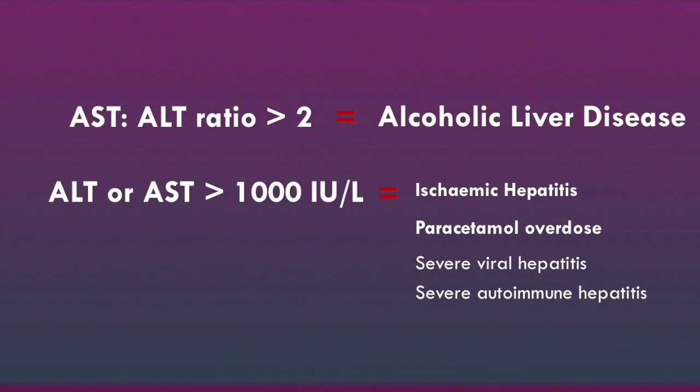The main causes of an ALT or AST greater than 1000 international units per liter are ischemic hepatitis and paracetamol overdose. That is a summary of how to interpret the ALT, AST, ALP, and GGT values in liver function tests.